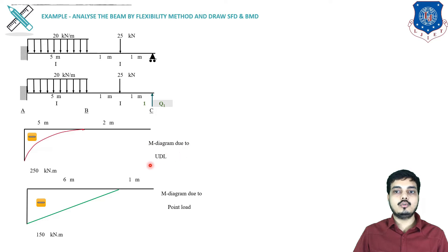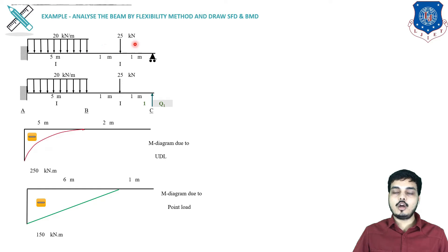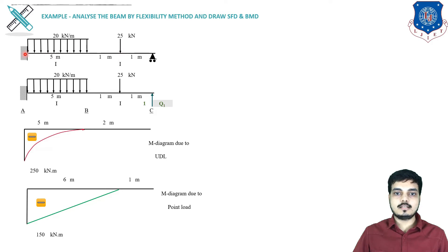Capital M diagram due to UDL: the moment value is 20 × 5 × 2.5 = 250 kNm, drawn as a parabolic curve because under UDL the bending moment diagram is parabolic. For the point load, the distance from the load to A is 6 m, so the moment is 25 × 6 = 150 kNm, drawn as a straight line because for a point load the bending moment diagram is a straight line.